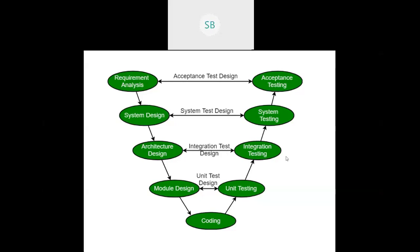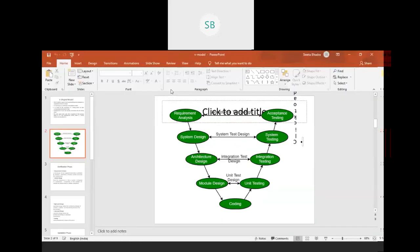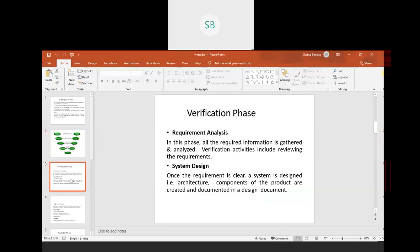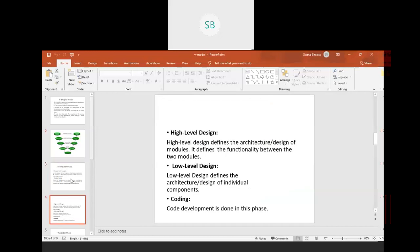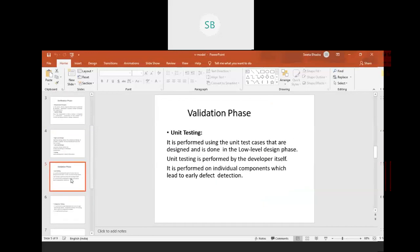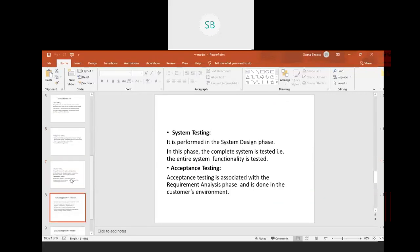The advantage of the V model is that verification and validation go on parallelly. The major disadvantage, compared to the spiral model, is that risk analysis is not done in the V model. Whatever was explained is mentioned in the slides — low-level design, high-level design, coding — please go through them.